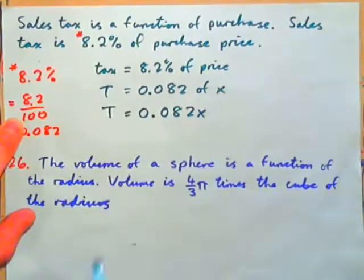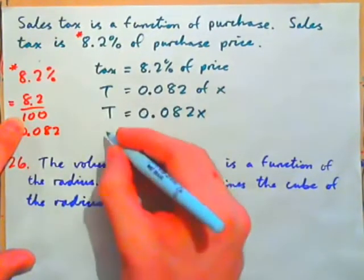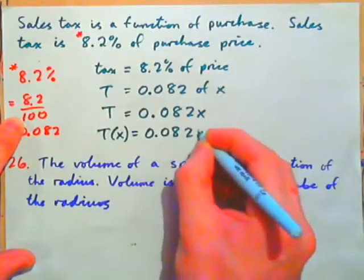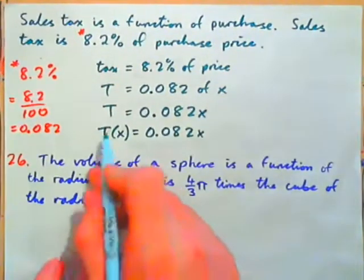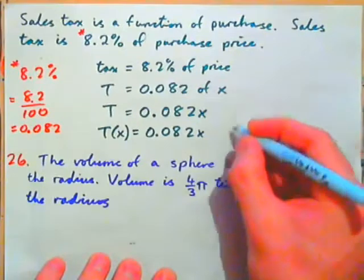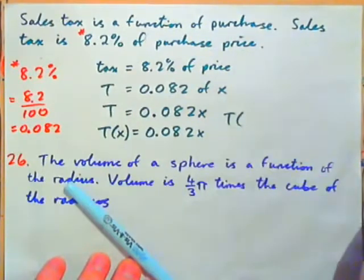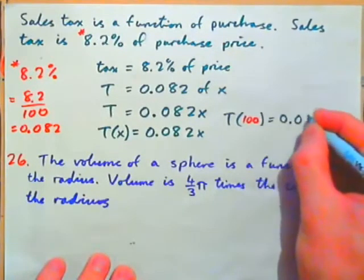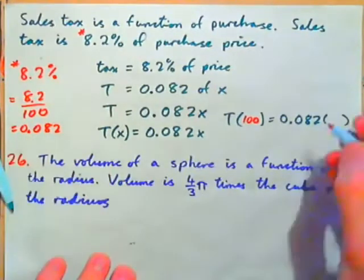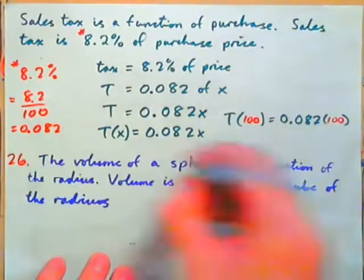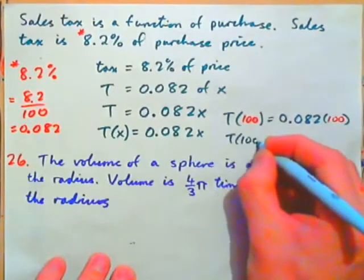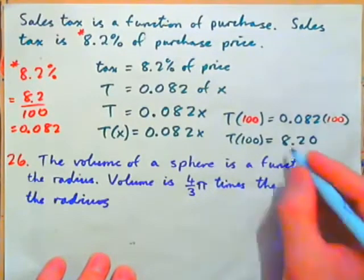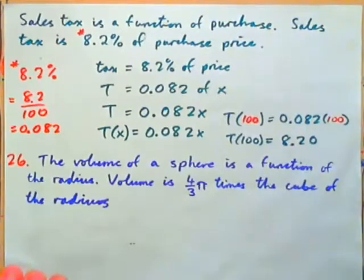So, we have T equals that. Now, if you want to use function notation, it's T of x equals 0.082x. And if you want to try out your new formula, you could do this. So, you could go, okay, tax on a purchase of $100 equals 0.082 times 100. And if you plug that in the calculator, you'll find tax on a purchase of $100 is 8.2, or $8.20. That makes sense, doesn't it?